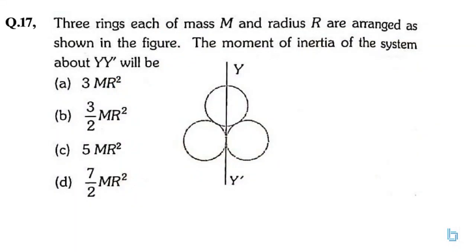Three rings, each of mass m and radius r, are arranged as shown in the figure. The moment of inertia of the system about y y' will be...